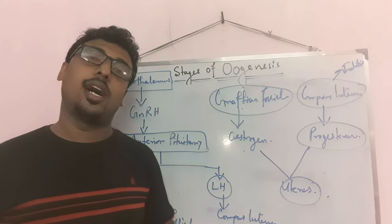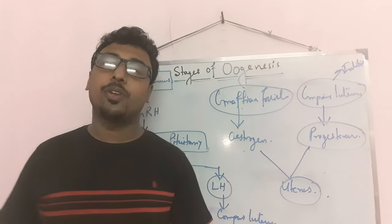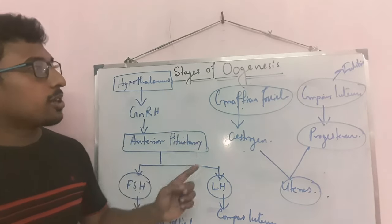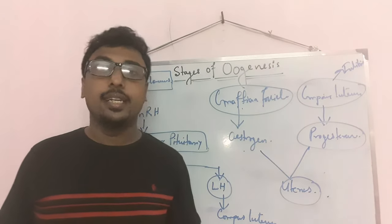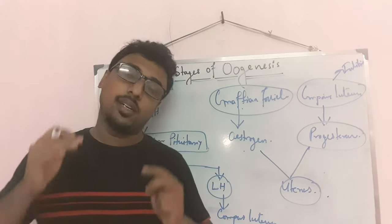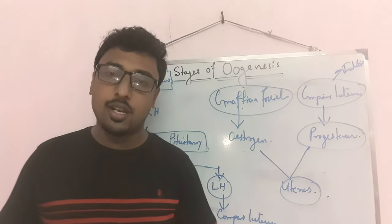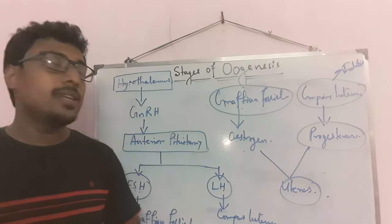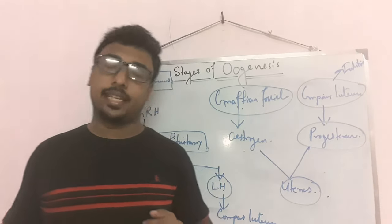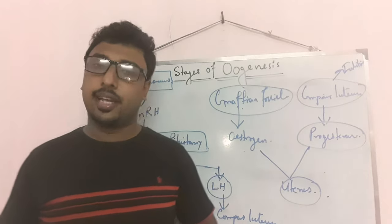I hope you have understood. If you have any doubts from this chapter, you may ask me. Remember, oogenesis starts in the fetus during the multiplication phase, but the growth phase starts in puberty. Thank you, students. I hope you are enjoying my class. Next class, I will explain about the menstruation cycle.